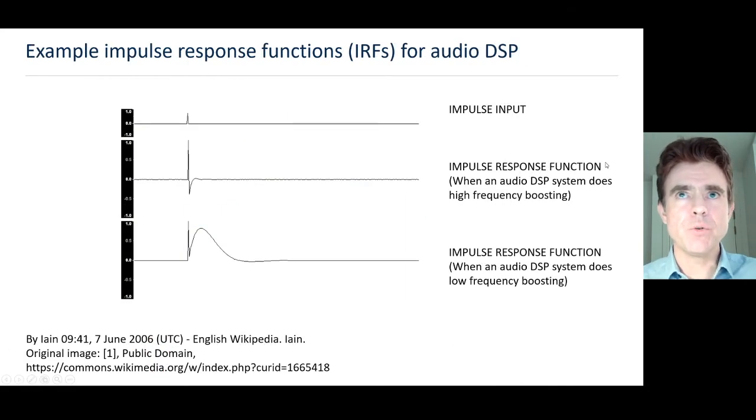This is an example of the impulse response function if that system had been, for example, an audio digital signal processing device. So an impulse in the input to such a system would give these kinds of different impulse response functions according to what that system is doing. If we passed it through our system, and it's no longer just doing a simple scaling due to amplification, but if, for example, we had an audio DSP that would do high-frequency boosting, then this would be the impulse response function. And what that means is each impulse in the input just gets replaced by that impulse response function.